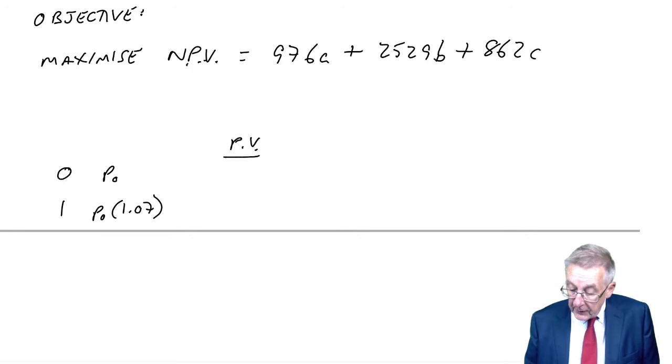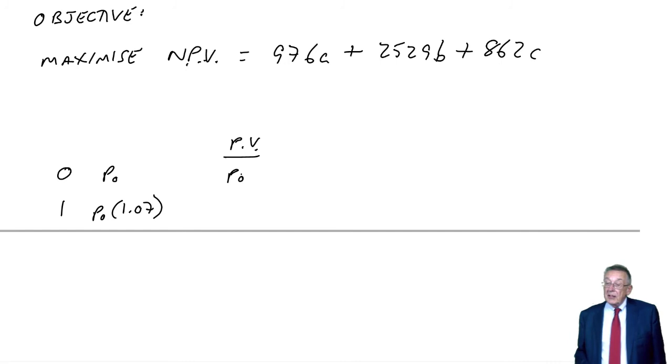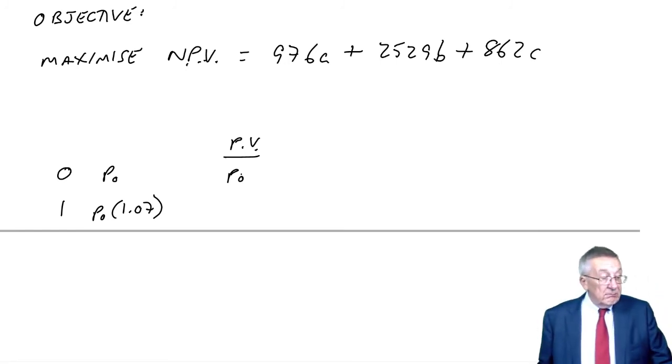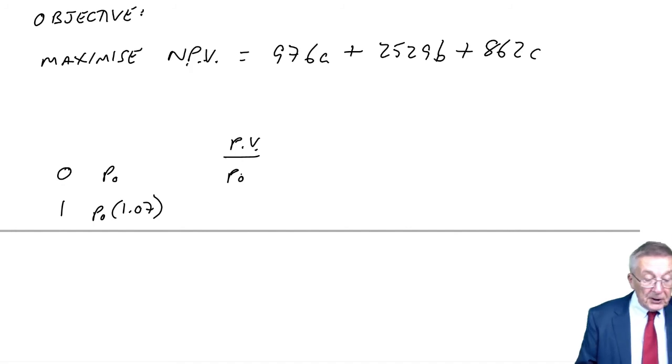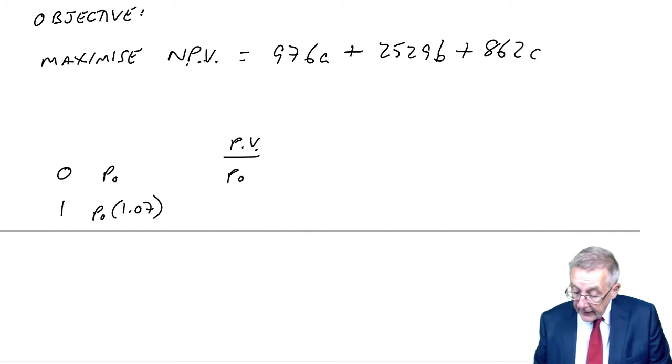The present value of P0 now is P0. The present value of an amount at time one. Well, discount from first principles. What was the cost of capital? 10%. So the discount factor, 0.909.